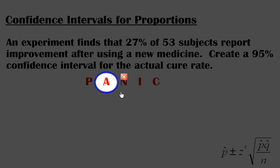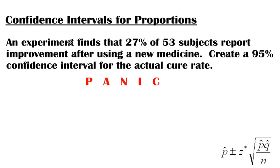A stands for assumptions and conditions and depending on whether you're finding a confidence interval for proportions or means or something else you need to check some assumptions and conditions. N is just name the confidence interval that you're going to create. I stands for interval that's where you actually do the math and C is your conclusion and your conclusion should always follow the same pattern for just about any confidence interval.